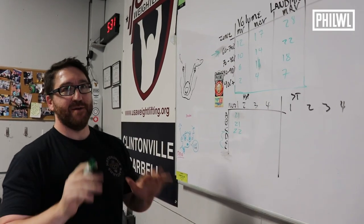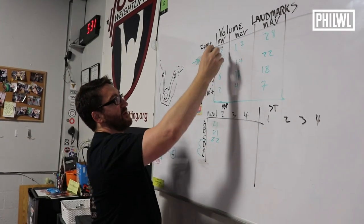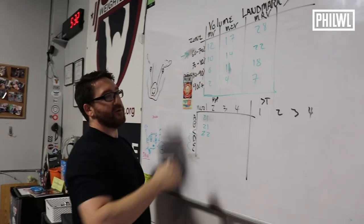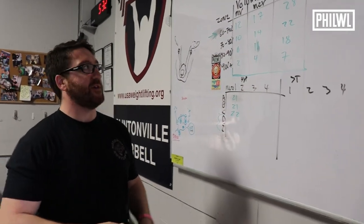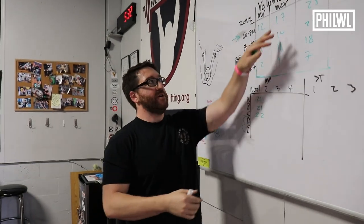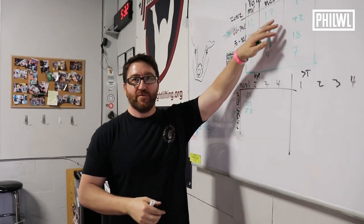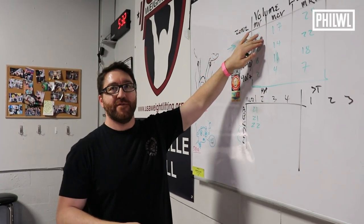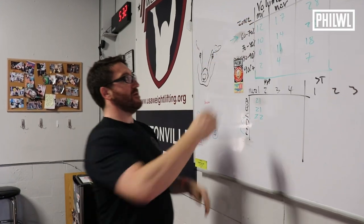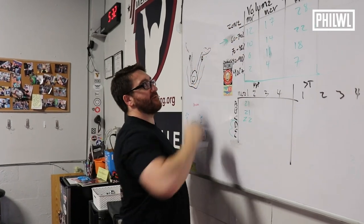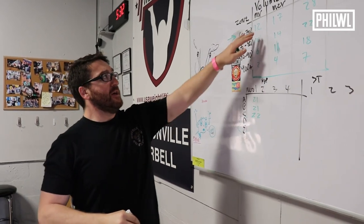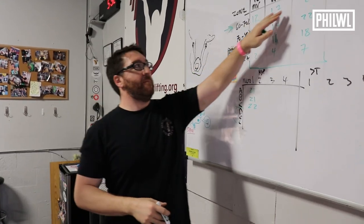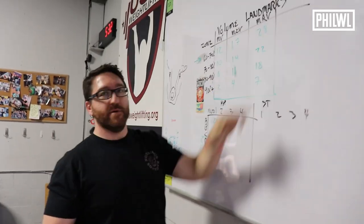We're concerned with three things on this scale. The two most important: first is minimum effective volume for a session — the smallest amount of volume we need to do to be maximally effective. If we're training below this number we're in maintenance volume, meaning we're doing just enough to prevent decay of that fitness quality and we're not going to make progress.